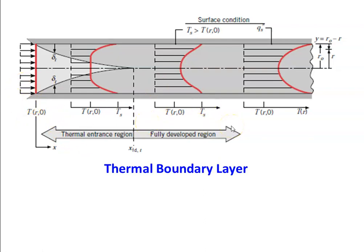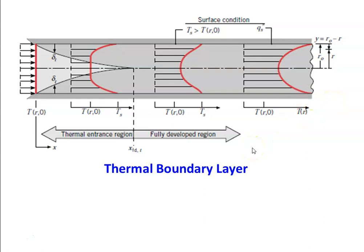After the thermal entry length, we have the thermally fully developed region. We consider two different surface conditions: constant surface temperature and constant surface heat flux. The temperature profile for constant surface temperature and the parabolic temperature profile for constant heat flux condition are different, and the equations for calculating heat transfer under these two conditions are also different.